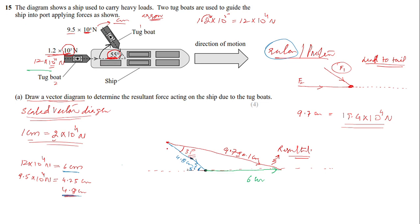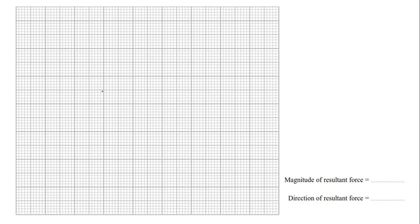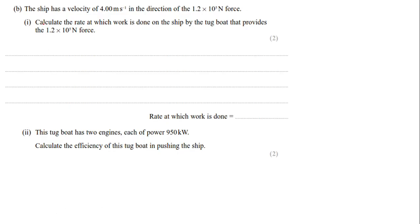All this working should be done on the grid provided in the paper. Start with the horizontal reference line on the grid, use the protractor to draw the vector lines, find the resultant vector, and then read off the magnitude and direction. That's how you solve this question using a scale vector diagram.